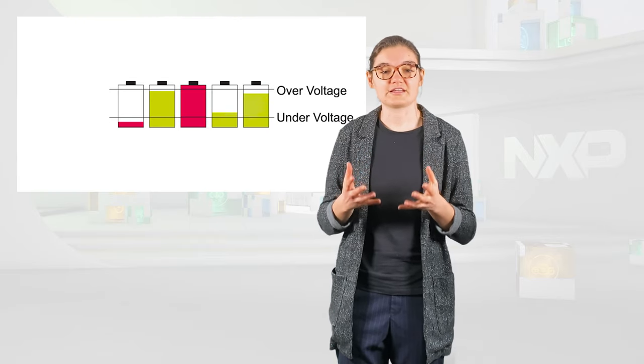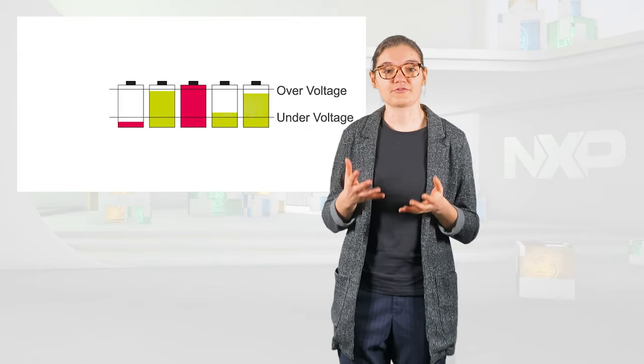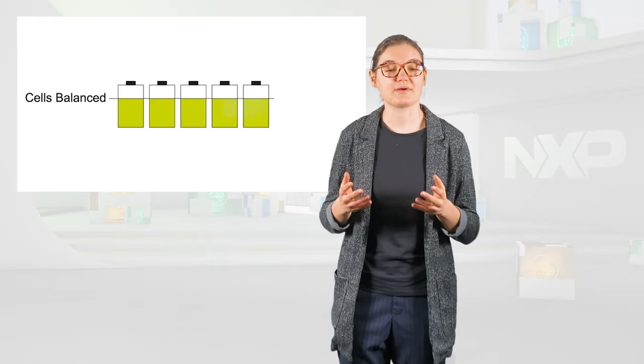The fourth and last main function of a BMS is cell balancing. Mainly due to small variation in their manufacturing, as well as varying aging process, the individual cells inside the battery do not have identical electrical behavior. Cell balancing compensates for these differences by equalizing the charge of all cells in the battery pack.